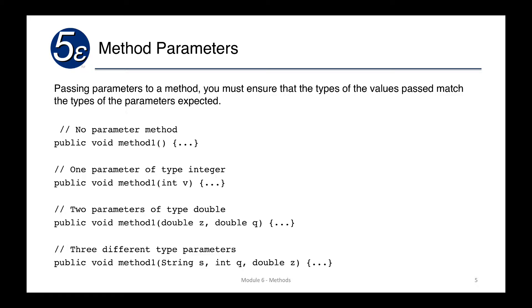So for example, these are the declarations. We will declare method one here with no parameters. In this case, we are declaring method one with one parameter which is of type integer, which within the code of the method will use the variable v as the value that's passed in. We have in this case two parameters: double z and double q. Again, it will use z and q within the code that is defined here. We can even use three different types. We can do string s, int q, and double z. You can do any number of combinations.